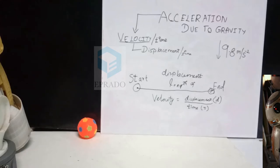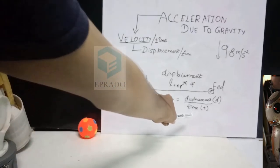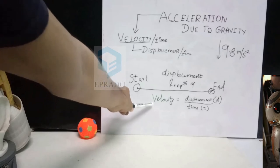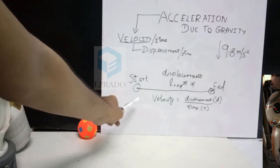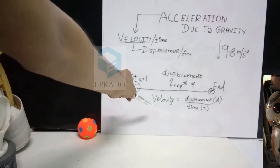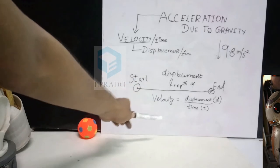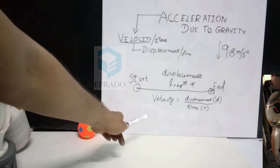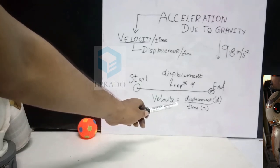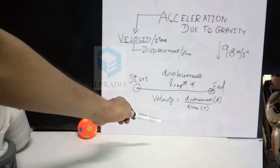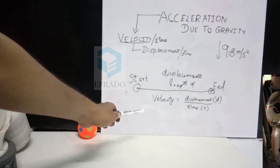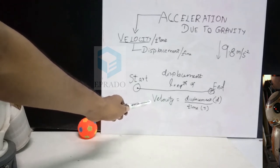So what happens? If the force applied on the object is more, then the velocity will increase and the time taken to cover the displacement is reduced. That is the displacement happens in a shorter time. So if force is increased, the velocity will also increase.